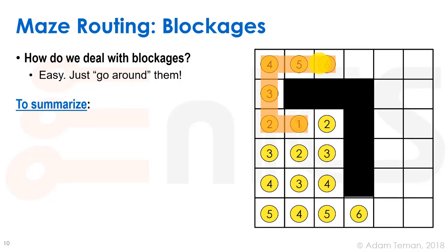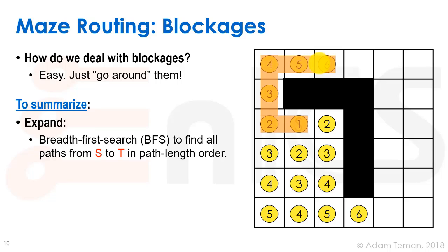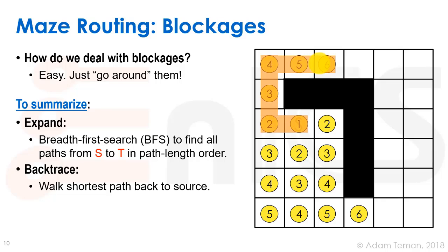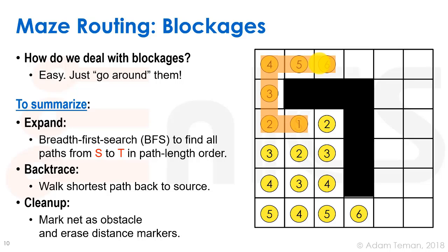To summarize maze routing: first, expand — a breadth-first search that finds all paths from source to target in path-length order. Second, backtrace — walk the shortest path back from target to source. Third, cleanup — mark the net as an obstacle and erase all distance markers, as they are irrelevant for the next step. That's the expand-backtrace-cleanup basis of maze routing.